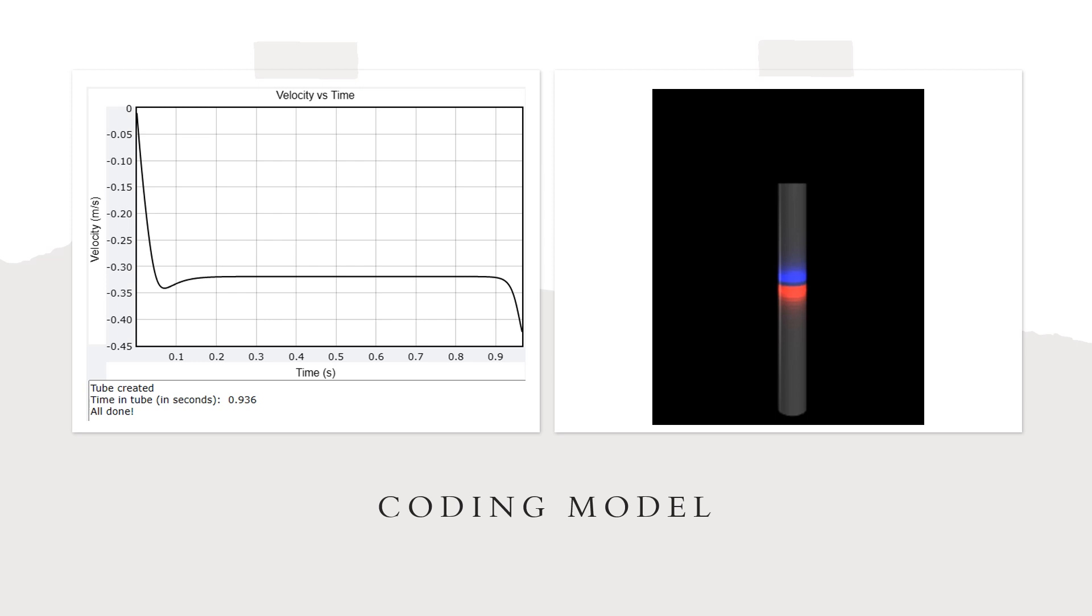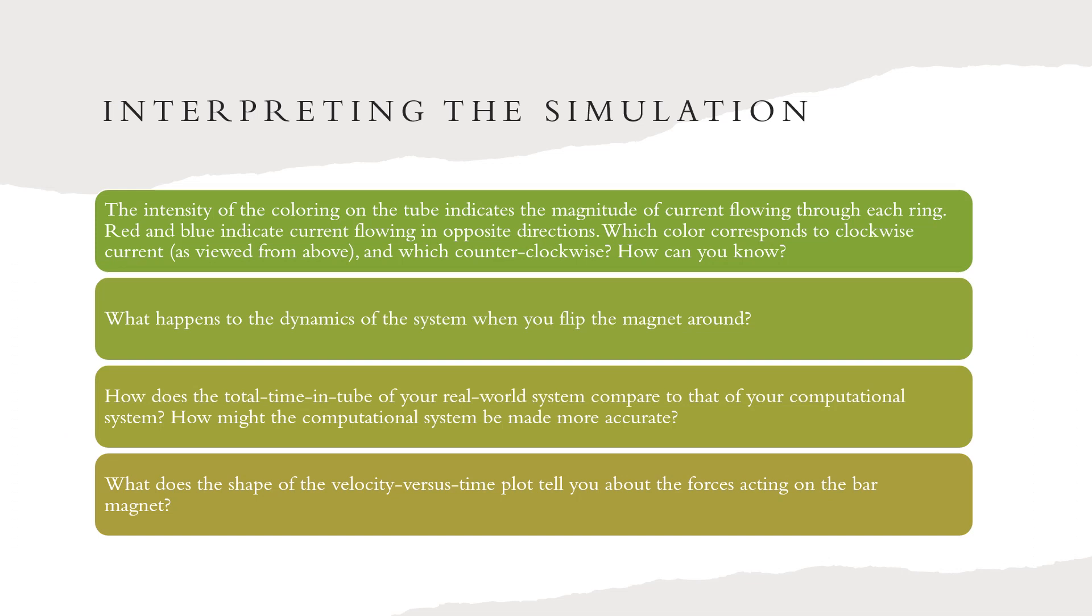Here are results from our coding. On the left is a velocity versus time graph that shows the falling of the magnet through the tube and our time was 0.93 seconds in the tube and on the right shows a visualization of the magnet in the tube and the red is the north which is going down.